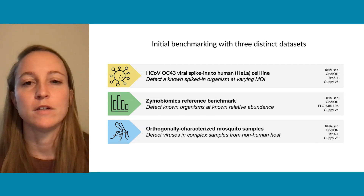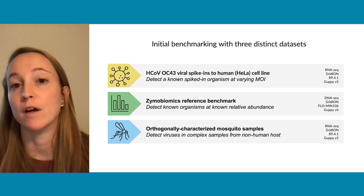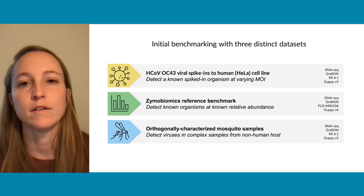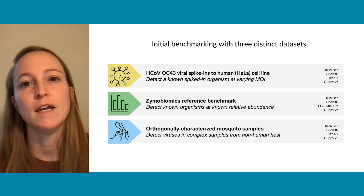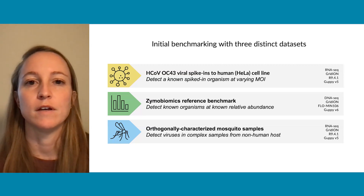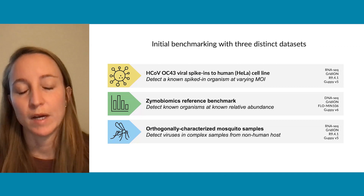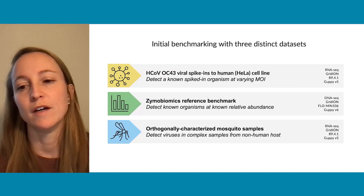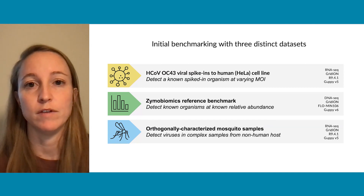Finally, we were interested in understanding how well we could detect organisms in a more complex sample from a non-human host. For this aim we used an orthogonally characterized set of mosquito samples that were previously sequenced using a different technology and characterized to understand the underlying virome within those samples, asking whether we could detect the same viruses using the ONT-compatible pipeline. These were sequenced using RNA-seq on a GridION with an R9.4.1 flow cell, base called using Guppy v5.